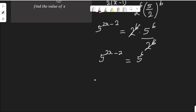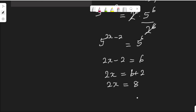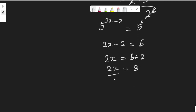The bases are the same, so we can equate the powers. That means 2x minus 2 is equal to 6. Collecting like terms, 2x is equal to 6 plus 2, so 2x equals 8. To get the value of x, we divide both sides by 2, therefore x is equal to 4.